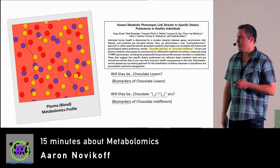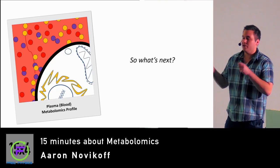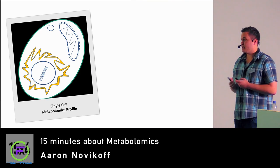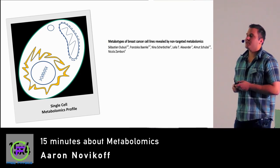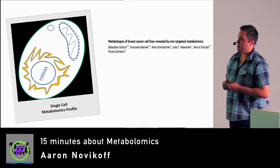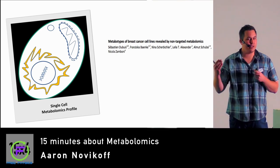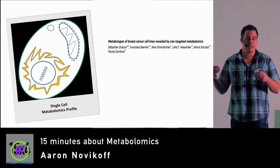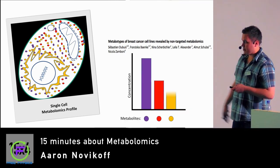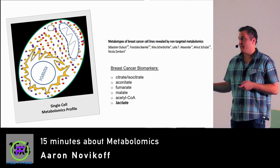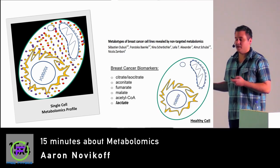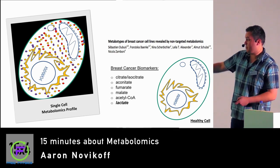As these metabolites travel through the blood, they're able to enter the cell, and then all those enzymatic processes we talked about earlier are able to occur. This brings us to our next metabolomics technique: single-cell metabolomics. Dr. Zamboni at ETH Zürich wanted to find out if he could differentiate breast cancer from normal cells metabolically. He took a picture of the cell and found the biomarkers — citrate, aconitase, fumarate, malate, acetyl-CoA, and lactate — which separate the two.